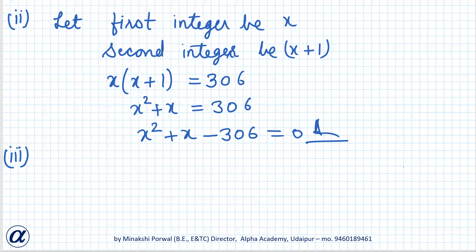Rohan's mother is 26 years older than him. The product of their ages in years three years from now is 360. We would like to find Rohan's present age.